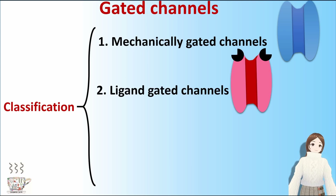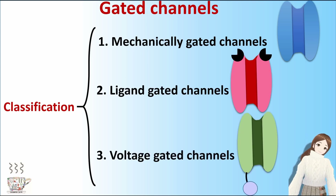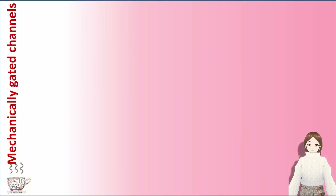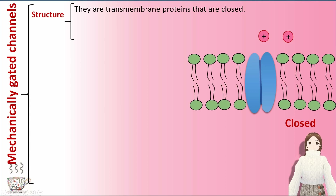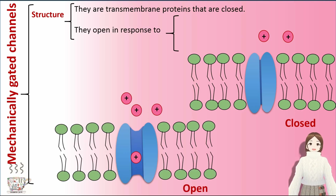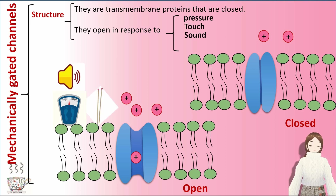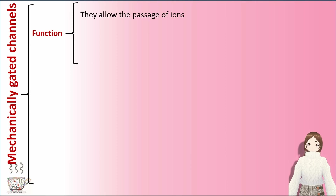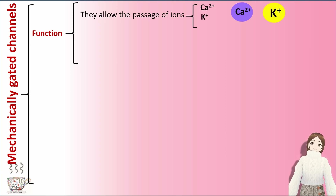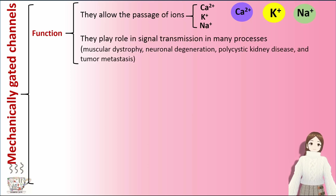Mechanically gated channels. They are transmembrane proteins that are closed. They open in response to pressure, touch, sound, and temperature. They allow the passage of ions like calcium, potassium, and sodium. They play a role in signal transmission in many processes like muscular dystrophy, neuronal degeneration, polycystic kidney disease, and tumor metastasis.